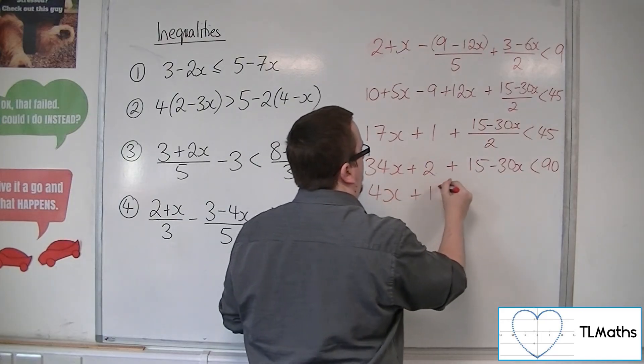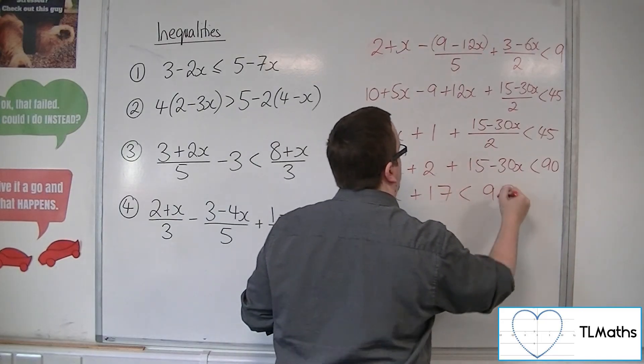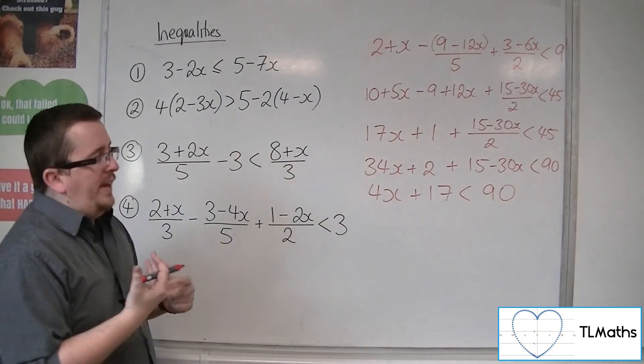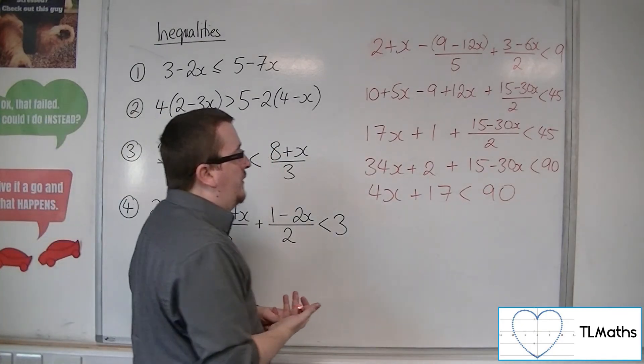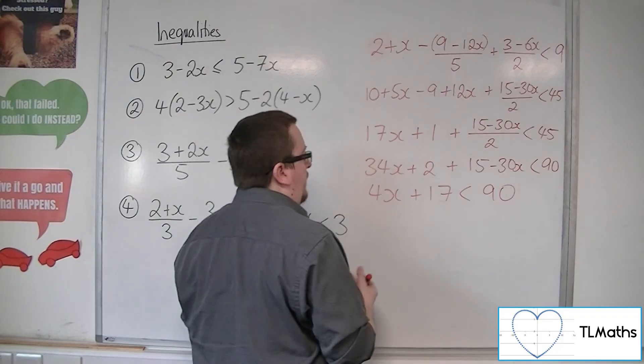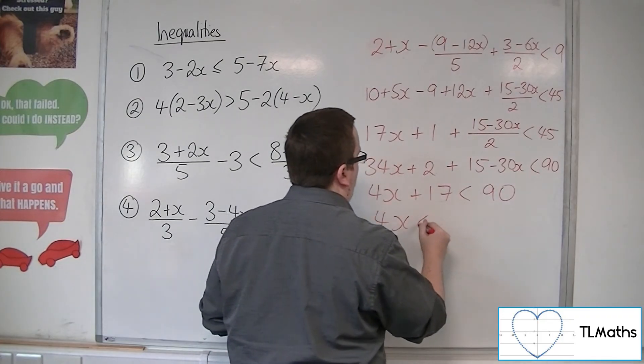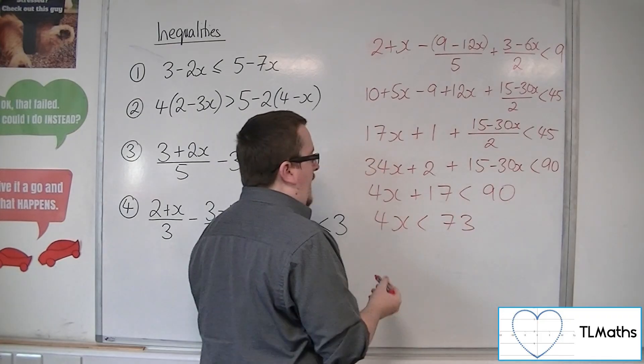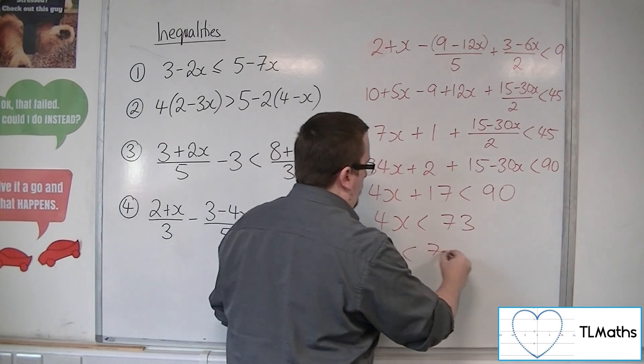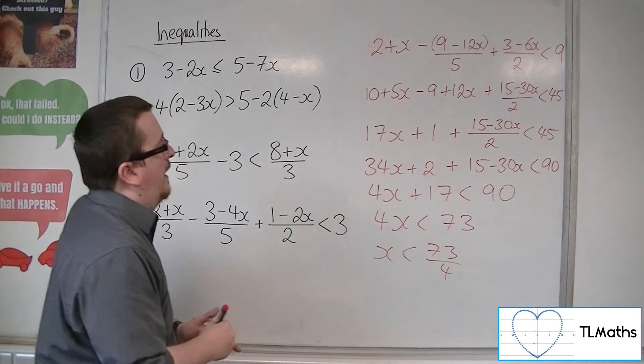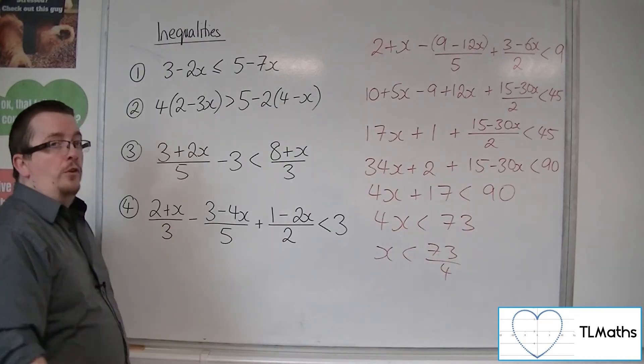2 plus 15 is 17, is less than 90. Take the 17 from both sides. That will get me down to 73. So 4x is less than 73. And then divide both sides by the 4. And that solves number 4.